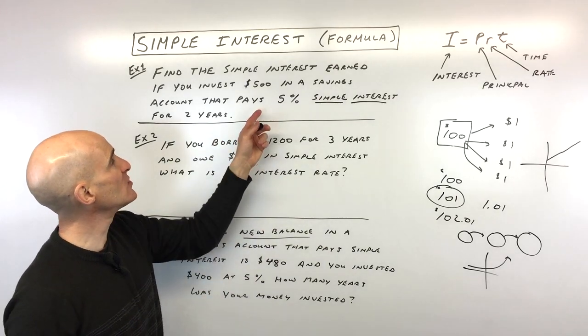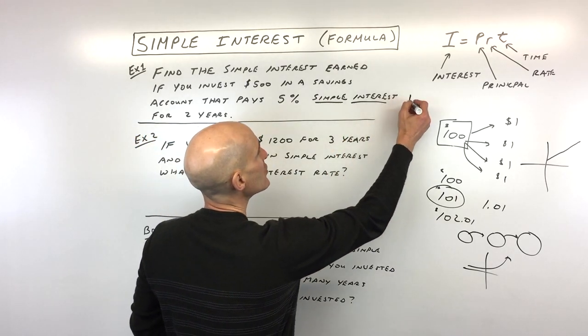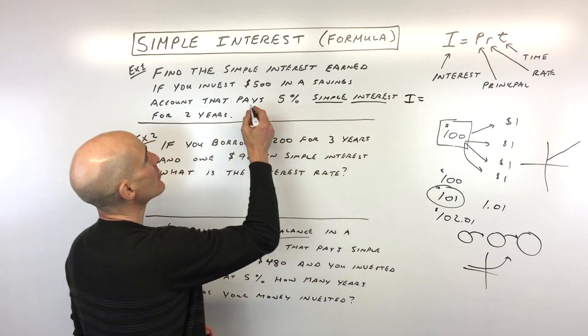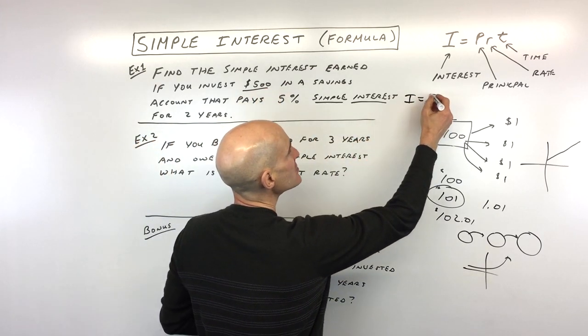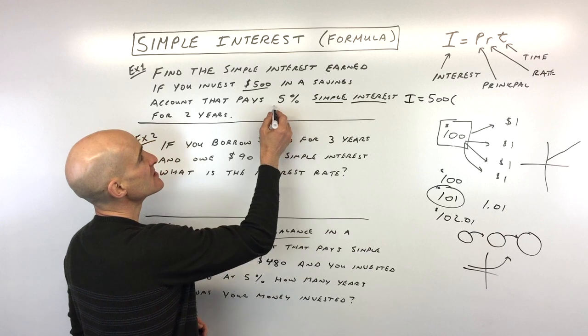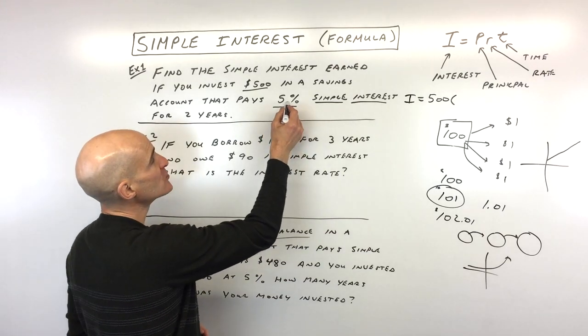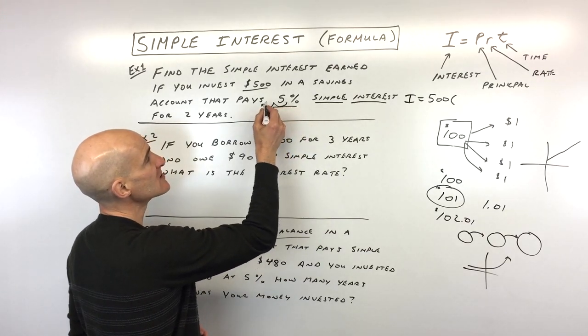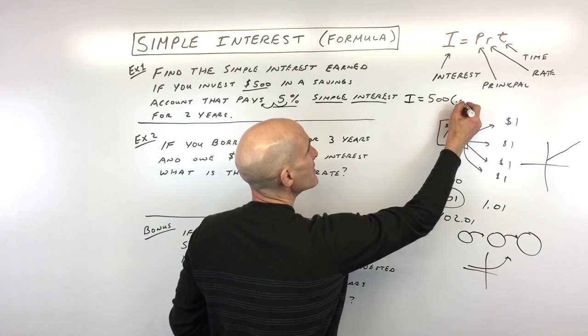So we're going to substitute in these values. I is what we're trying to calculate. P is our principal, which is the $500, the initial amount. The rate is 5%, but we want to convert this to a decimal, so we move that two places to the left. That's going to be 0.05.